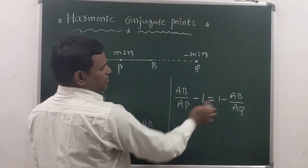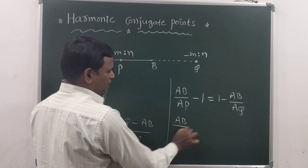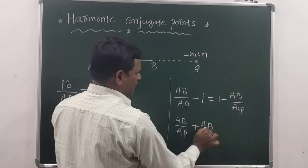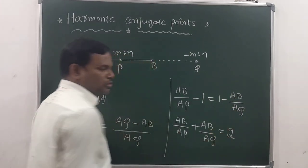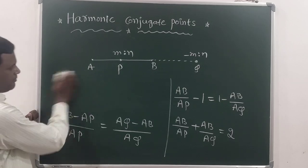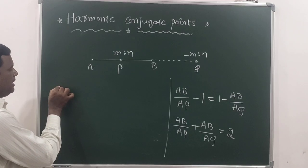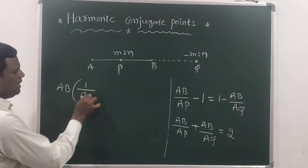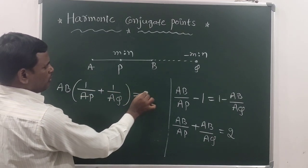Now simplify this. Bringing the 1 to the left side, you get AB by AP plus AB by AQ equals 2. Taking 2 AB common from the numerator, inside you get 1 by AP plus 1 by AQ, which is equal to 2.